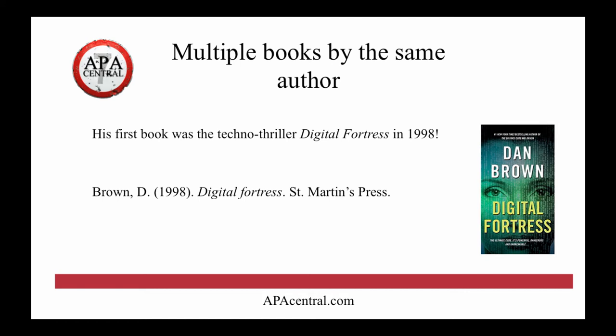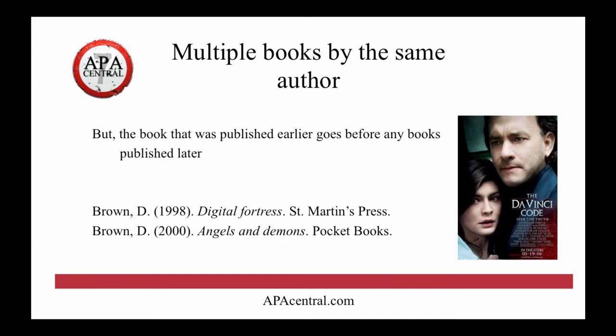I have another video about that if you're interested. So if we have multiple books by the same author, the book that's published earlier goes before any books published later. Digital Fortress comes before Angels and Demons in your reference list, even though the D in Digital comes after the A in Angels — so it's done chronologically. Now that's a poster for the Da Vinci Code, which I have not actually read or seen, but I imagine it's like a mashup of Castaway and Amelie, because those are the two actors who are in it.